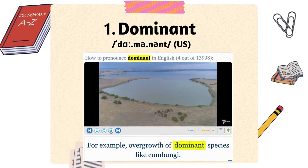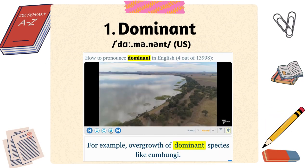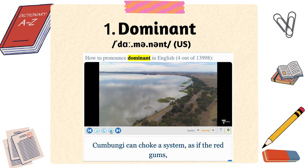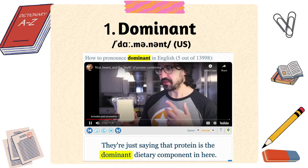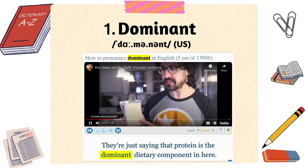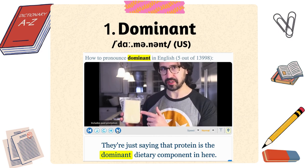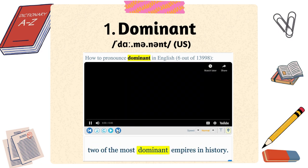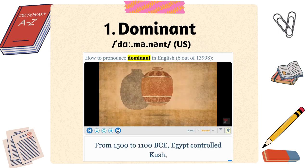For example, from Youglish: overgrowth of dominant species, like kambangi, can choke a system. They're saying that protein is the dominant dietary component. Two of the most dominant empires in history.